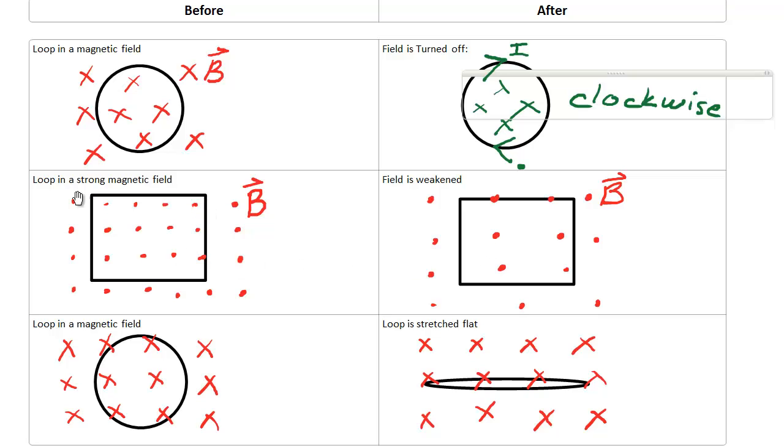So the goal is to get back to its original configuration inside the loop. Originally we had a large number of dots inside the loop, and now we have a small number of dots. We want to get back to the original, so we need to add dots. If I use my green pen to represent this induced magnetic field,